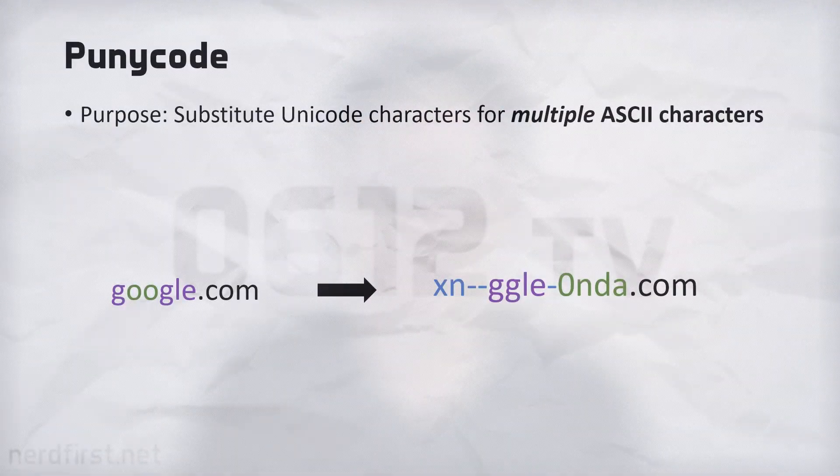Long story short, we want our URLs to basically only contain ASCII characters. What that means of course is that you don't have the full expressiveness of Unicode — you can only work with a very limited character set. One way we can work around this in order to display Unicode characters is to simply substitute a Unicode character for a string of ASCII characters, and essentially that is what you are seeing.